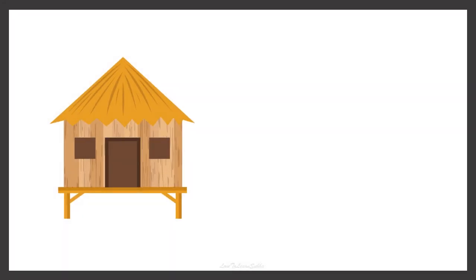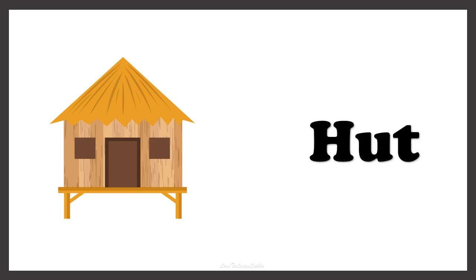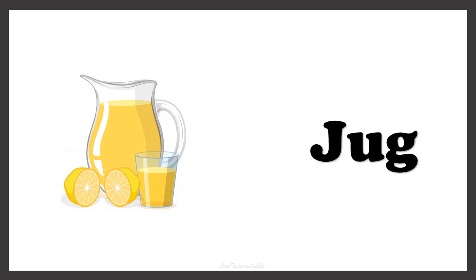Now this is a picture of HUT. To find the article that comes before the word HUT, we have to find the first letter. The first letter of HUT starts with the consonant H, so we use A. This is A HUT. Now can you guess the name of this image? Yes, this one is JUG. JUG starts with the letter J, which is a consonant, so we use the article A. This is A JUG.